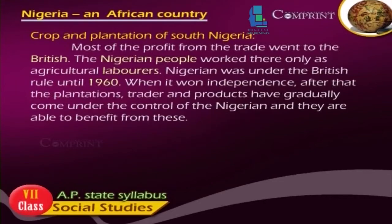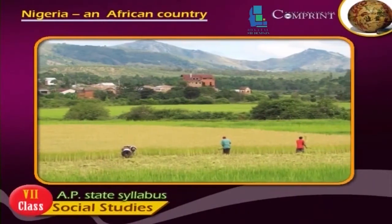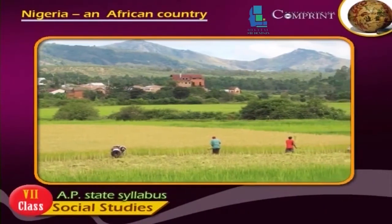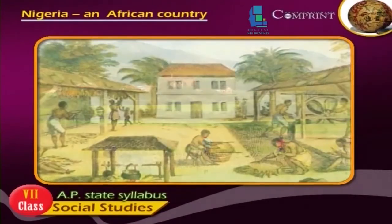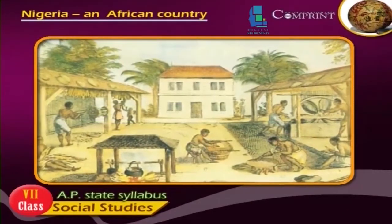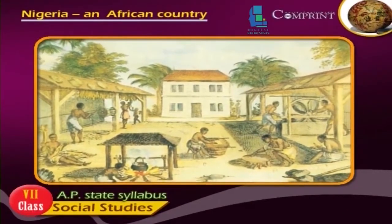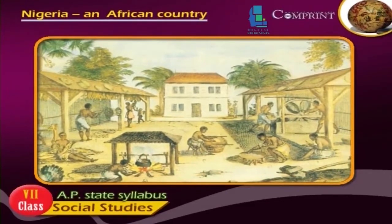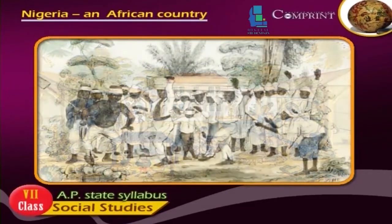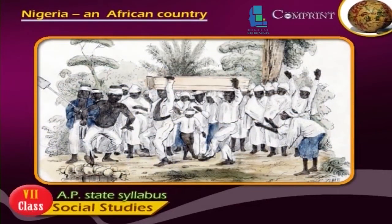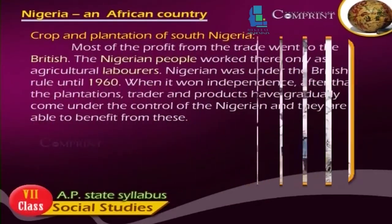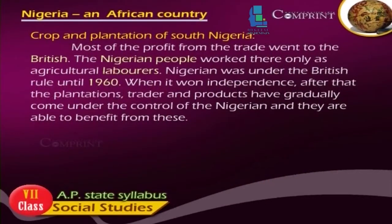Most of the profit from the trade went to the British. The Nigerian people worked there only as agricultural labourers. Nigeria was under British rule until 1960. When it won independence, the plantations, trade and products gradually came under the control of Nigeria, and they are now able to benefit from these.